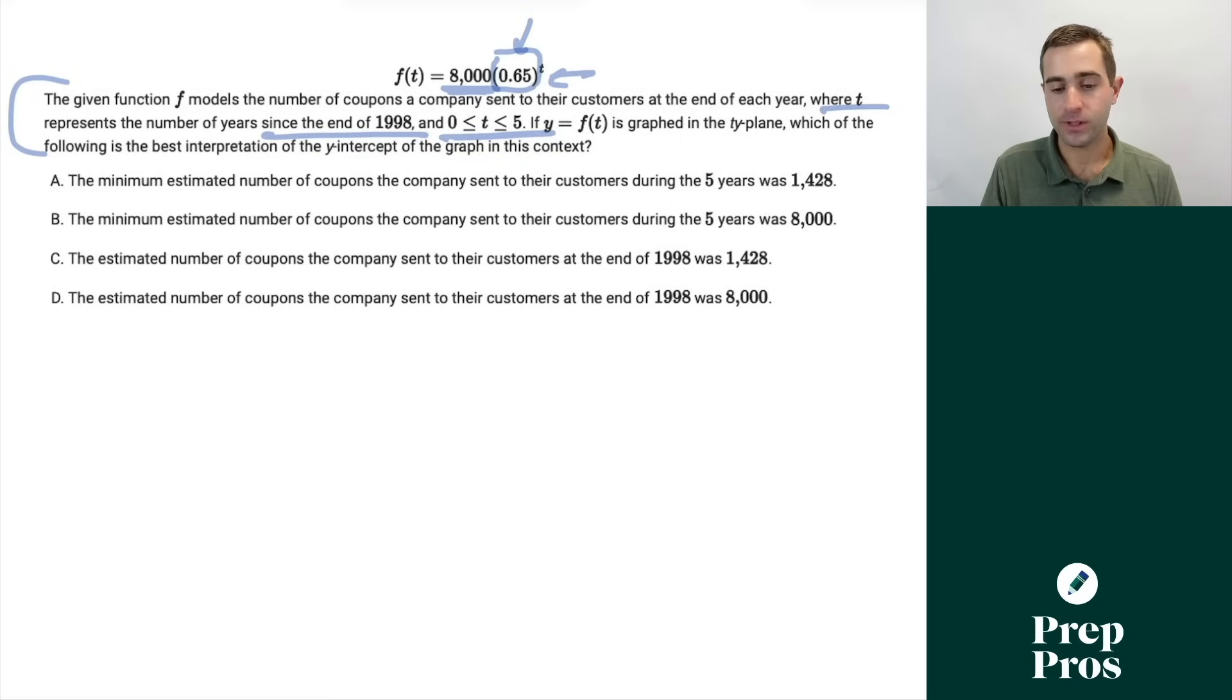If y equals f of t is graphed in the ty plane, which of the following is the best interpretation of the y-intercept of the graph? As we just talked about, the 8,000 is our y-intercept. So we can knock both of these off quite easily. We always want to think about that that's our initial or starting amount. So that has to be the amount we had at the end of 1998. And that's going to show us why D is our correct answer here.